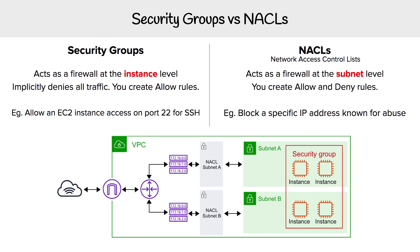You can say exactly, I want to deny exactly this IP address. The reason you can't do this with security groups is that because it implicitly denies everything, in order to deny a single IP and allow everything else, imagine all the IP addresses in the world — you'd have to create allow rules for everything and just exclude that one IP address, which is almost impossible. So for NACLs, the best use case is to block a specific IP address known for abuse.